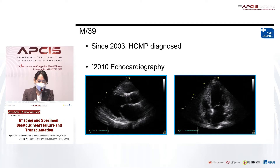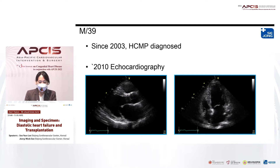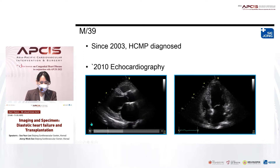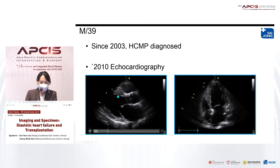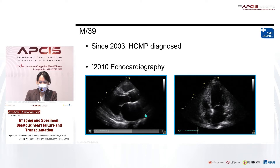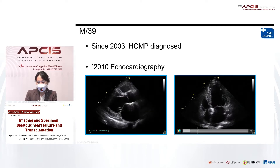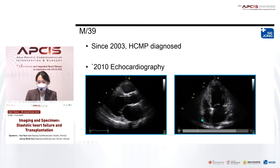We cannot retrieve earlier imaging, but the report described the interventricular septum was increased up to 80 mm. The 2010 echocardiography showed the interventricular septum was increased but relatively normal. LV was slightly dilated, LA was enlarged, and LV function was slightly decreased to 40%.